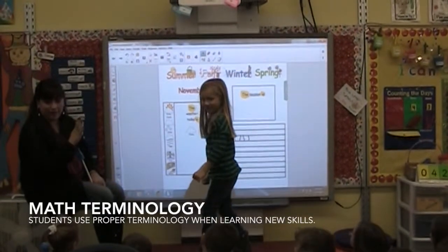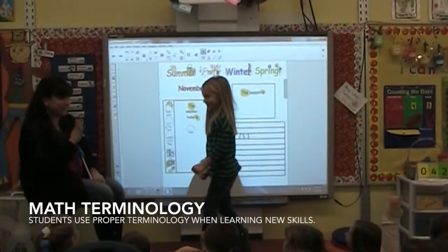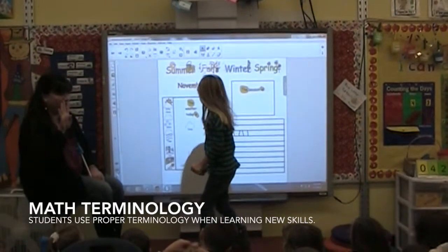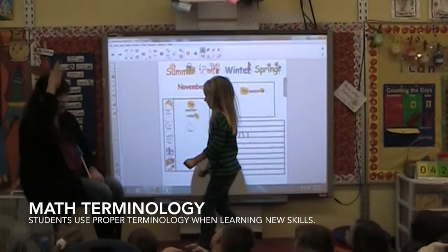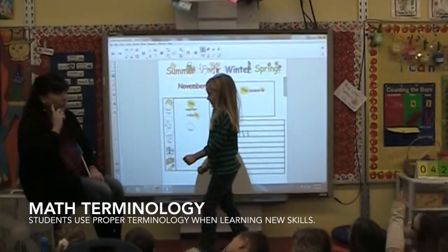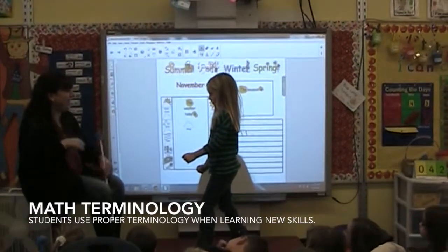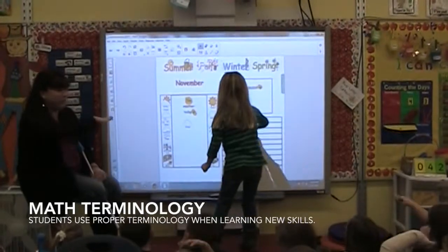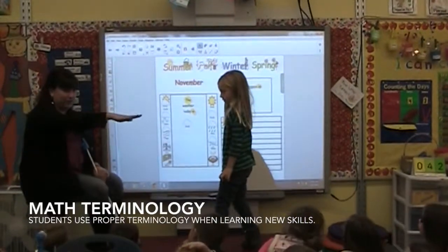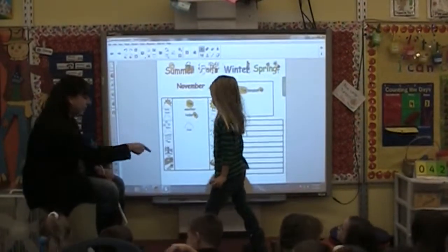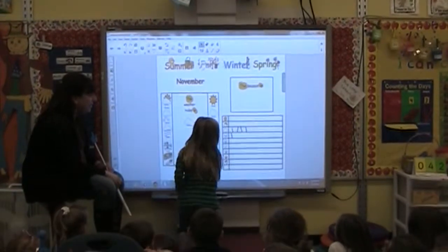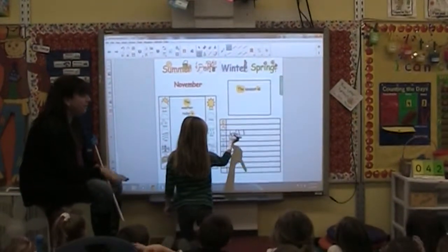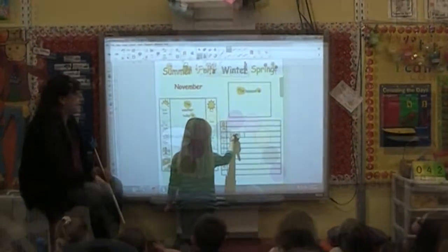We are doing tally marks for cloudy days and sunny days. We have four vertical lines. What do we do with the fifth line? Do you know what that word is called again? Horizontal. Can you take the black pen and draw that fifth line to make a group of five? Excellent.